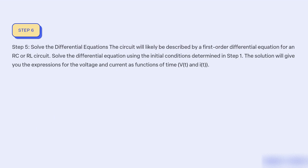Step 5: Solve the differential equations. The circuit will likely be described by a first-order differential equation for an RC or RL circuit. Solve the differential equation using the initial conditions determined in Step 1. The solution will give you the expressions for the voltage and current as functions of time, V(t) and i(t).